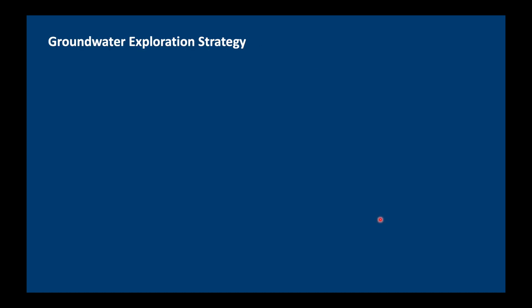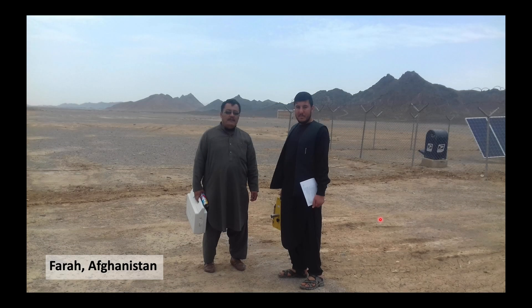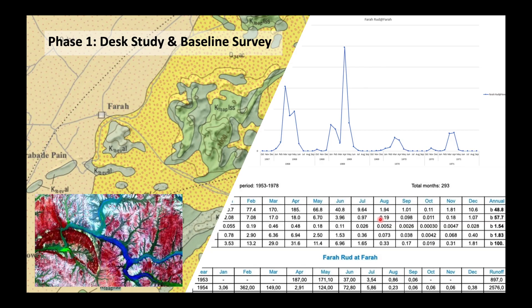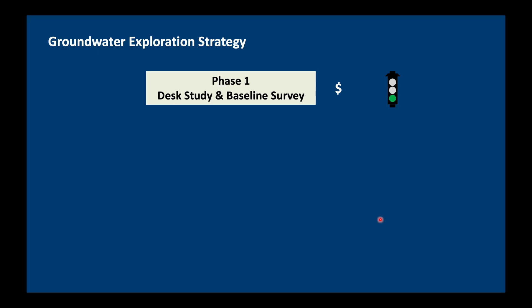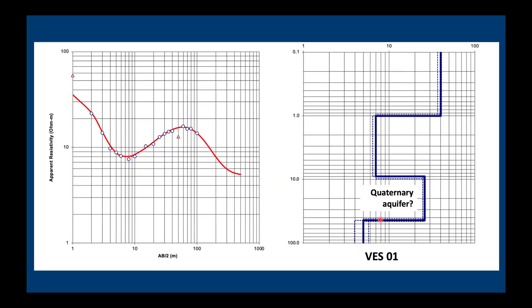In a previous video I talked about my preferred groundwater exploration strategy. The first phase involves a desk study and a baseline survey. We'll go to the field and try to get as much information as we can, and in the office we try to gather all the data and reports from previous studies. If that is positive, we go ahead with our geophysical survey.